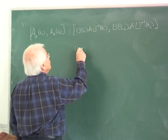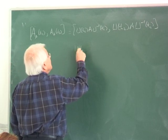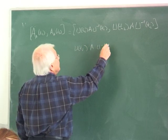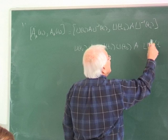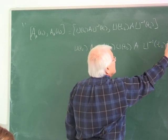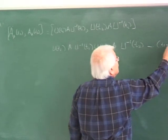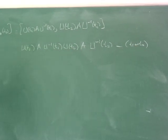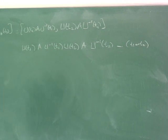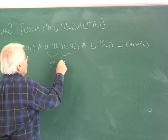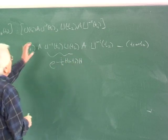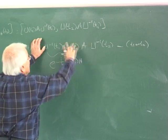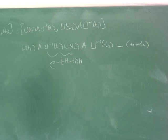So what do we have? We have U(T1) A U-inverse(T1) U(T2) A U-inverse(T2) as the first term in this commutator, and minus the T1 and T2 order interchanged. This is minus i over h-bar times (T1 minus T2) H in between. If it wasn't in between two A's, A would come together and we would have a cancellation.